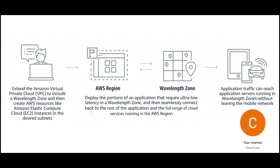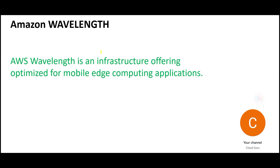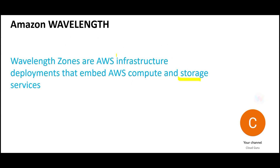Here is a diagram — you can create VPCs to include your Wavelength zones and then use the services. These will reside on an AWS region, just like your availability zones, and then the application traffic can reach the application servers running on Wavelength zones. In the cloud world we have AWS regions, AWS availability zones, and similarly you have Wavelength zones. These zones are basically infrastructure designed for high performance.